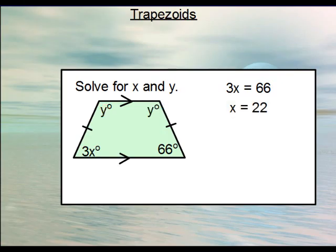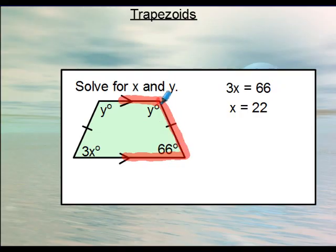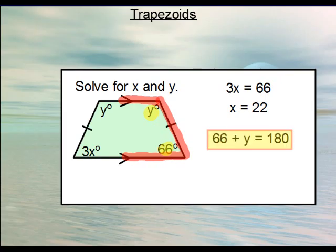Going back to what we talked about with trapezoids: since the two sides are parallel, connecting them gives a C-shape — upside down in this case. The angles created by that C-shape, y and 66, are same-side interior angles, meaning they add up to 180 degrees. Therefore, subtracting 66 from 180 gives y = 114. That gives us both x and y.